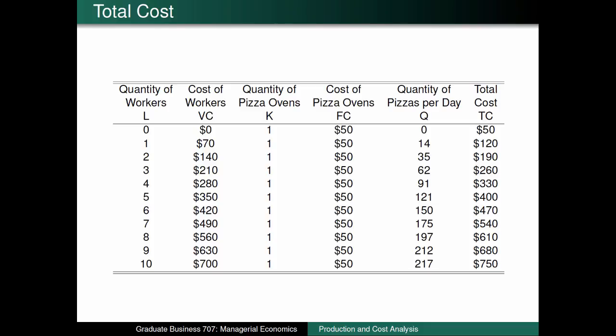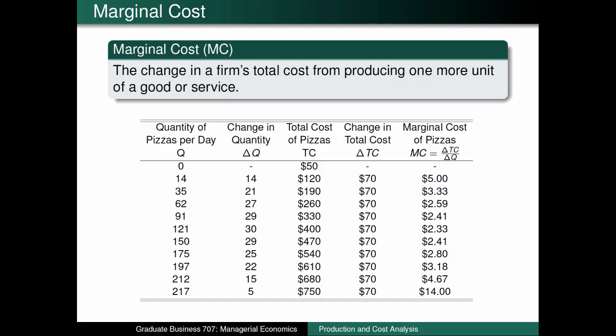The next two slides introduce two cost concepts that will be very important for us in future chapters: marginal cost and average total cost. Marginal cost is calculated as the change in total cost divided by the change in quantity. As such, marginal cost provides information on how much it costs Rocket Joe's to produce an additional pizza. We have a dash associated with the initial value of marginal cost since we can't calculate an increase in cost when there are no pizzas produced.